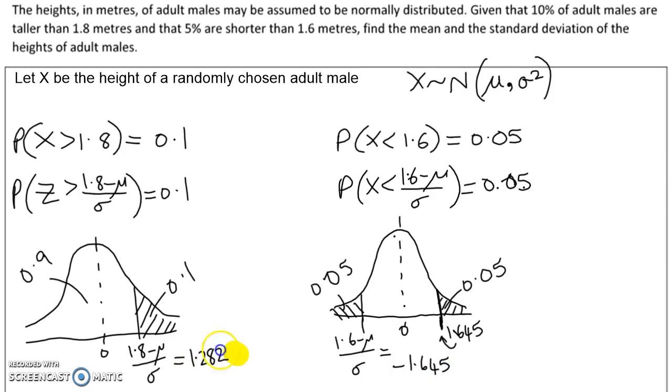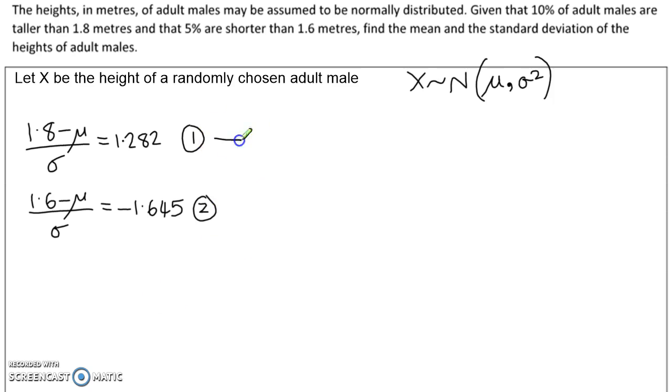So here are our two simultaneous equations that we're now going to solve to find mu and sigma. To solve these, I'm going to start by multiplying both of them by sigma. So this one becomes 1.8 minus mu is 1.282 sigma, and the other one, 1.6 minus mu, becomes minus 1.645 sigma. I'm going to call that equation 3 and equation 4. If I now subtract these equations, mu will disappear.